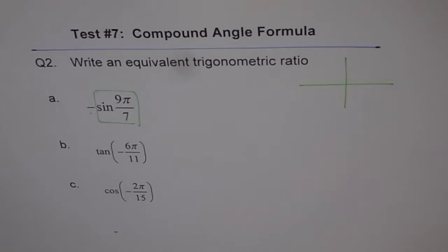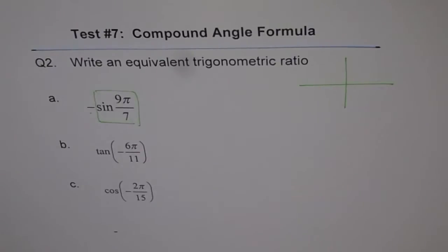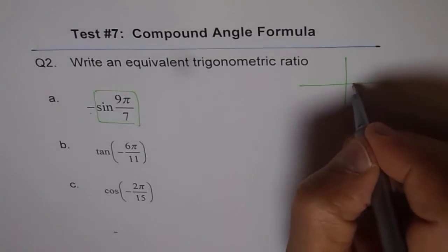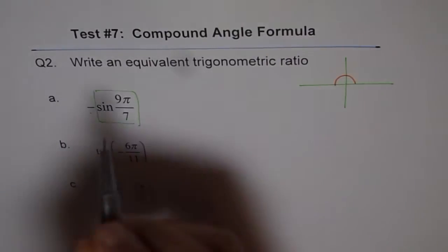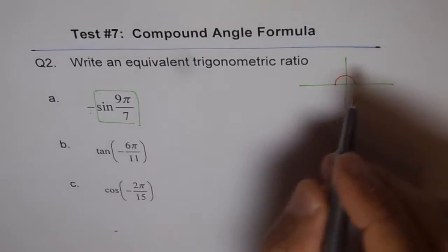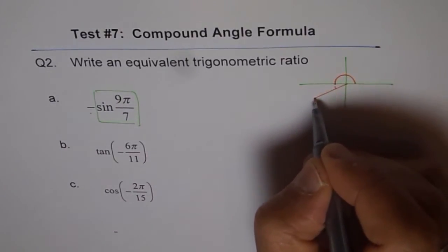Let's try to understand. Sine 9π by 7. Where will it be? So this is our pi. And this pi is now divided into 7 portions. But you are on the 9th. That means you did 7 here and 2 more. Do you see that 2 more?